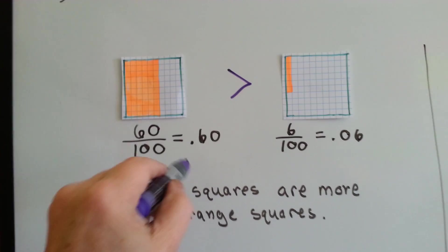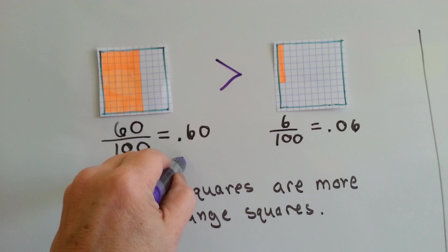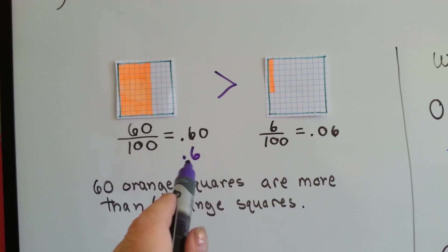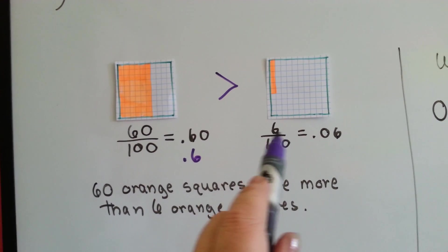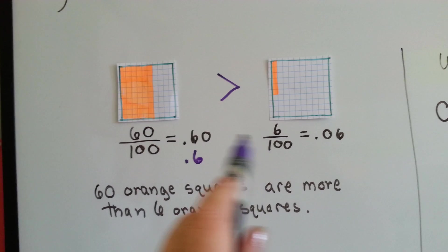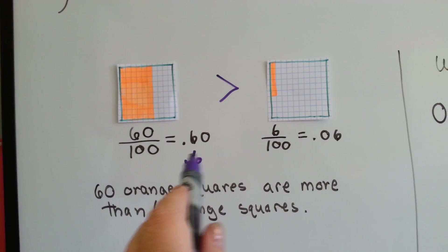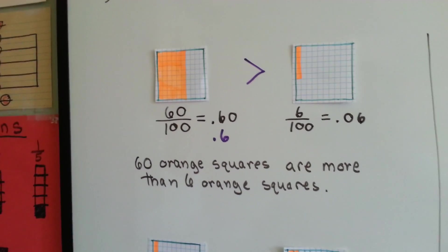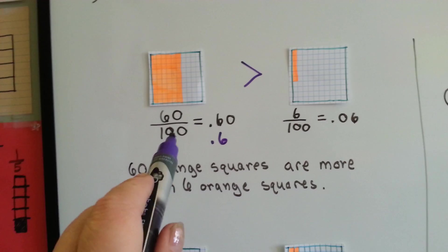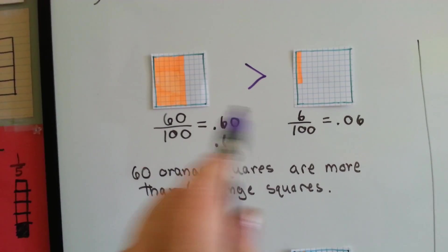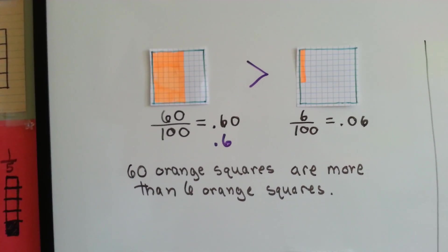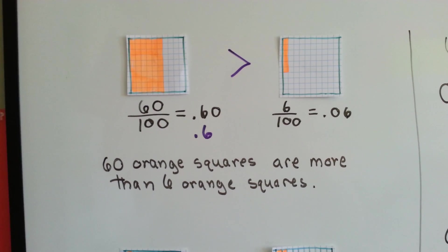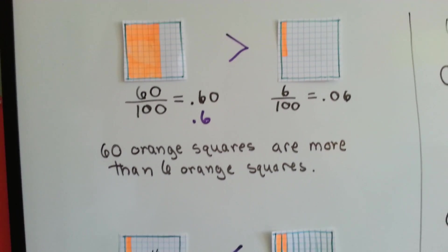This could also be written like this. That's what can be confusing, because you'll think they're either the same or one is bigger than the other. Make sure that they're over the same fraction amount — don't compare tenths to hundredths. Make sure you're comparing tenths to tenths, or hundredths to hundredths.